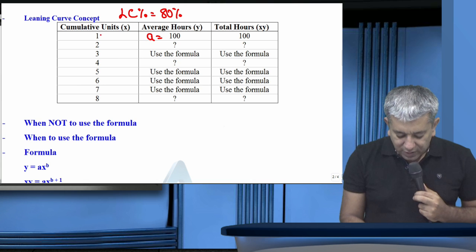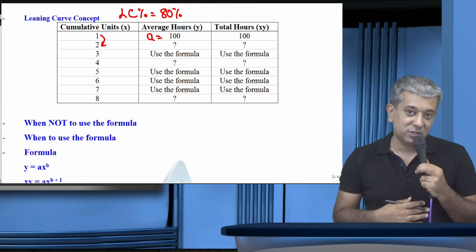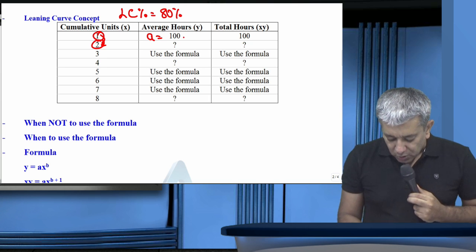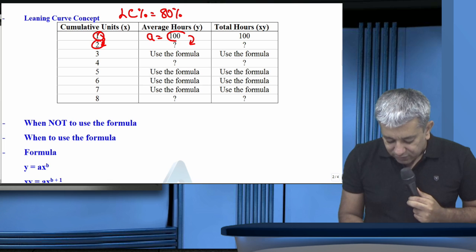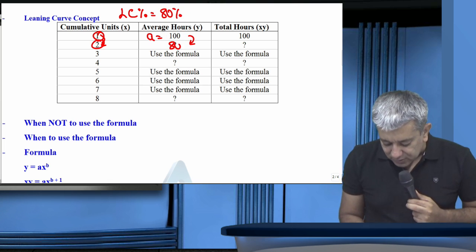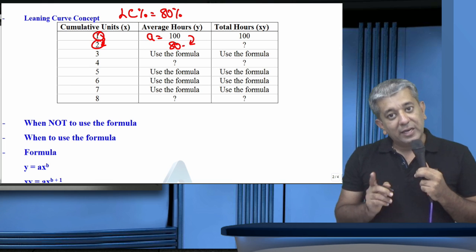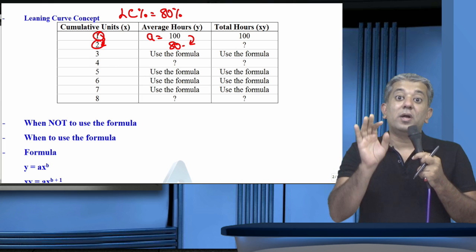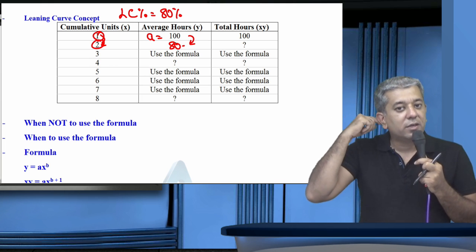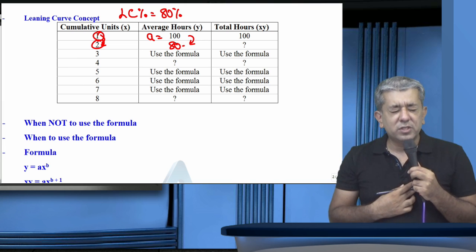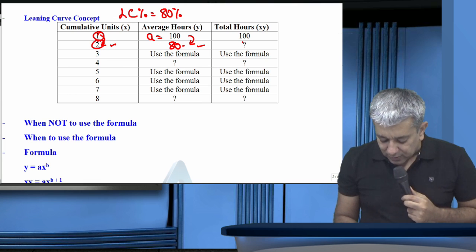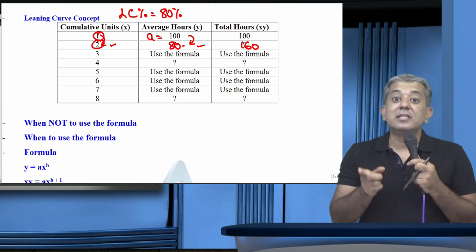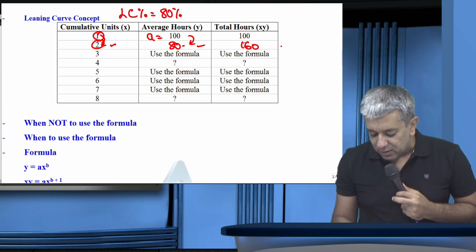Whenever the units will double, apply the learning curve. Agar one unit tha aur aap two units tak jaate ho, toh two units ke average hours will be 100 into 80% = 80 hours. Remember, 80 hours is the average — it does NOT mean first unit and second unit each take 80 hours. Two units on average take 80 hours each. Total for two units = 2 × 80 = 160. So first unit still takes 100 hours; second unit takes 160 − 100 = 60 hours.